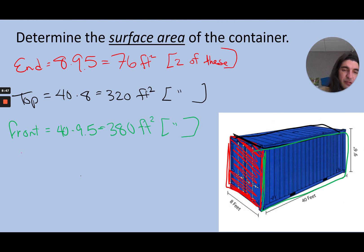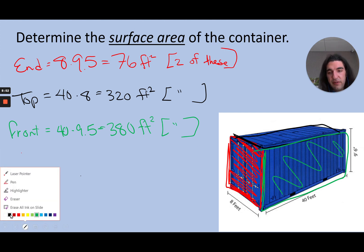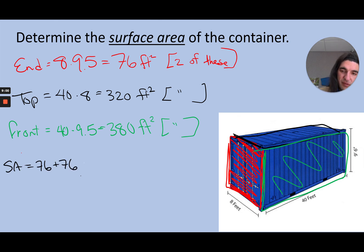So now my total surface area is just add them all up. So there's 76 and 76, kind of the two ends. There's 320 and 320, that's the top and the bottom. And then 380 and 380, those are the two sides. And if you add those up, that should be 1552. I think I should probably double check and not just do mental math. 1552.